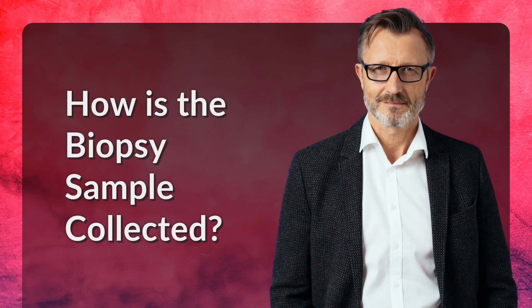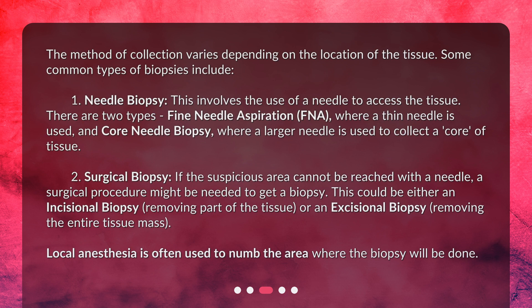The method of collection varies depending on the location of the tissue. Some common types of biopsies include: 1. Needle biopsy — this involves the use of a needle to access the tissue. There are two types: fine needle aspiration (FNA), where a thin needle is used, and core needle biopsy, where a larger needle is used to collect a core of tissue.